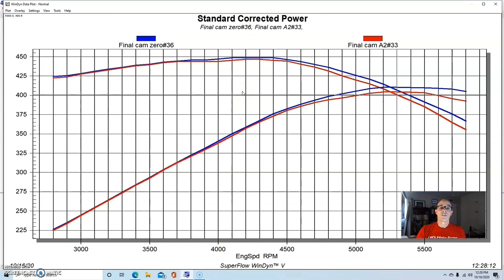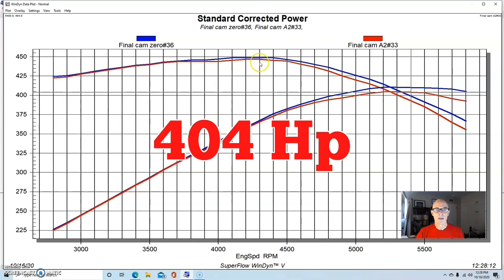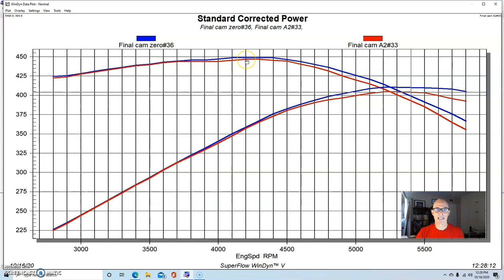While we all think that advancing the camshaft improves low-speed power, we didn't actually see that. Now we ran this thing down to about 2,800 RPM. Actually what happened at the top, we kind of would expect. This thing lost power. Peak power was down to 404 horsepower. Peak torque was only down slightly.